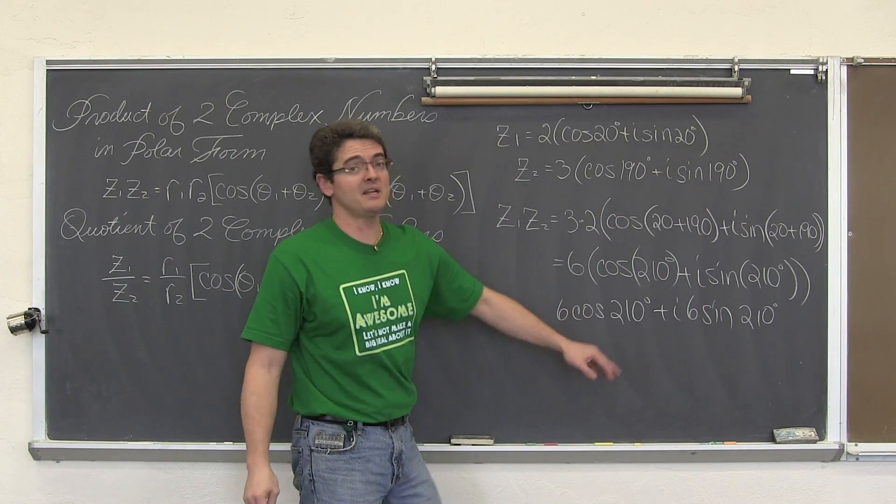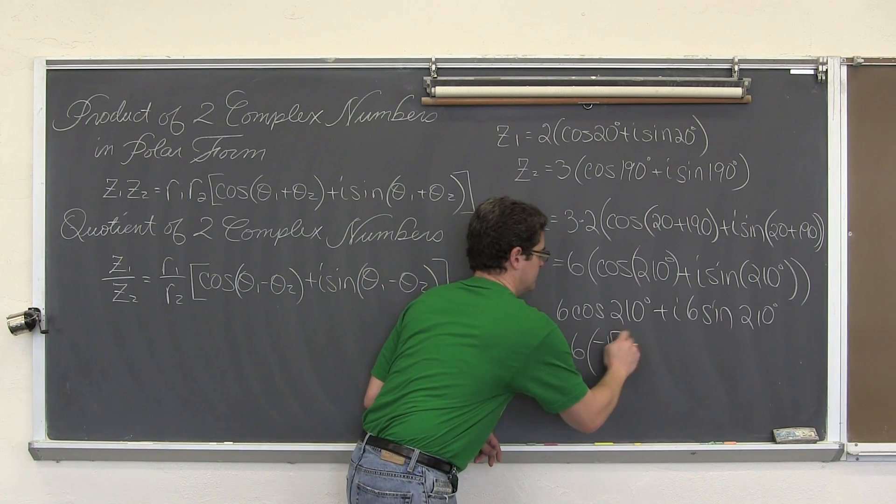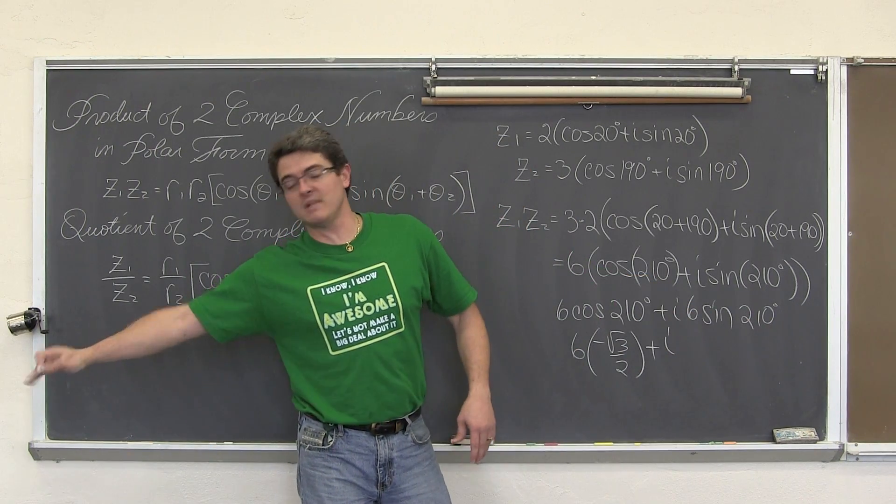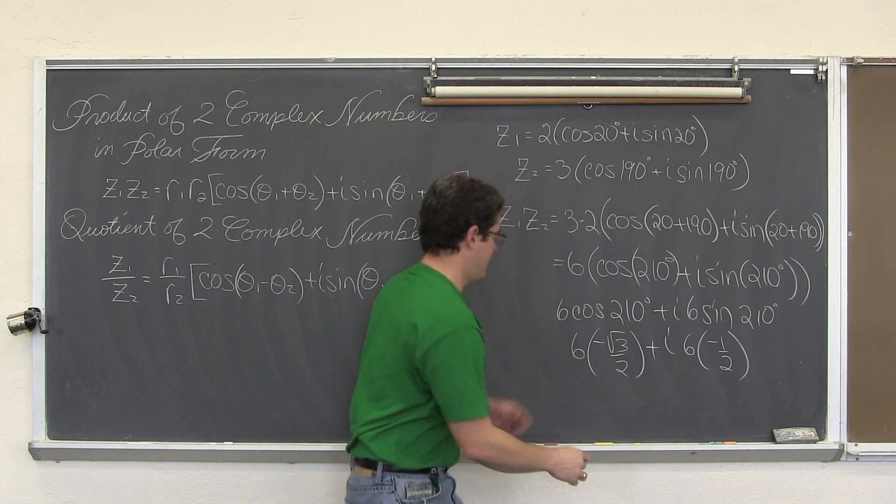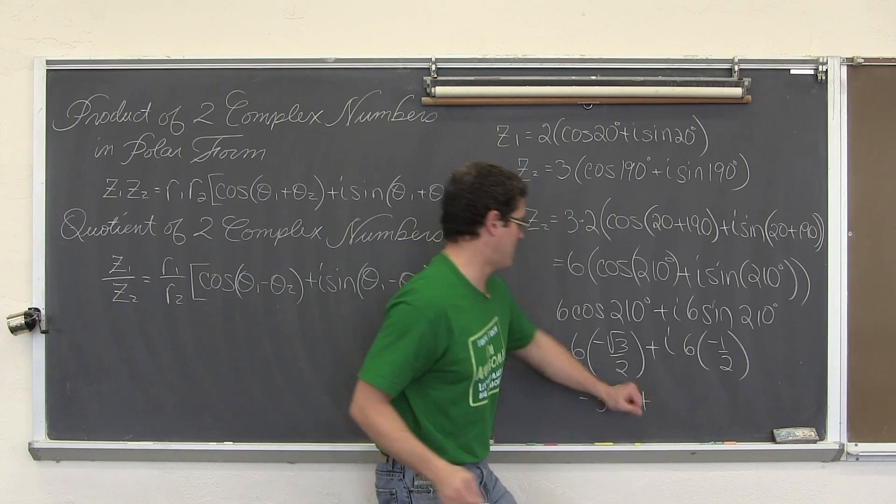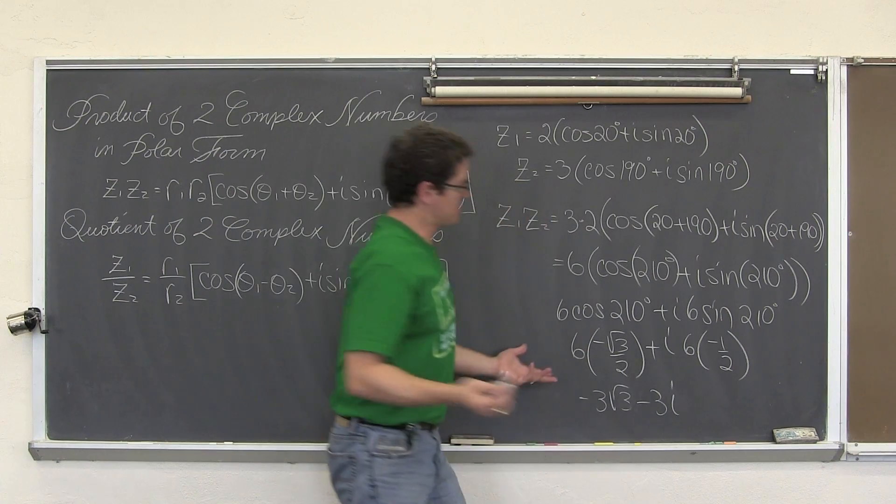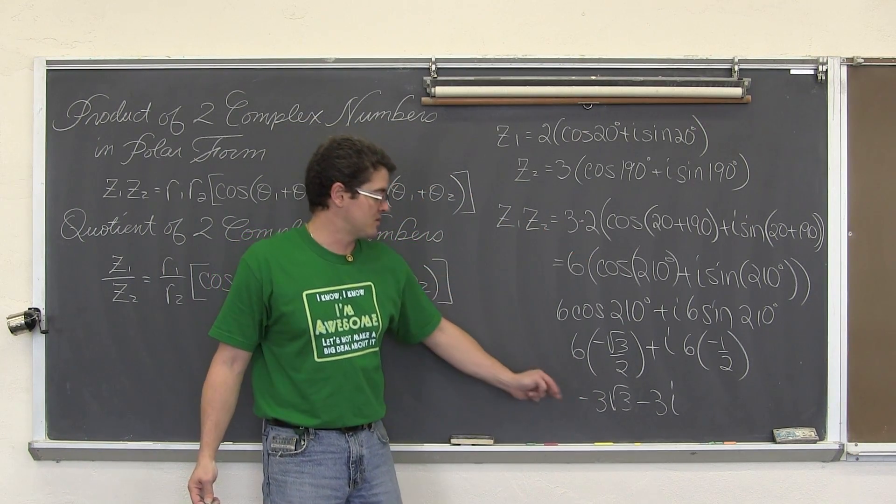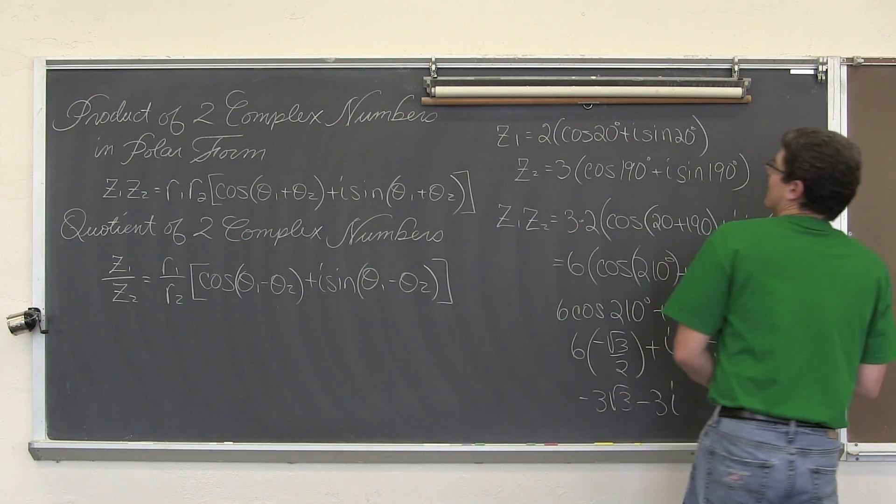The cosine of 210° is negative square root 3 over 2, and sine of 210° is negative one half. So we have negative 3 square root 3 plus i times negative 3. Just to remind you, if you want to go from polar form of a complex number into rectangular form, just work it out.